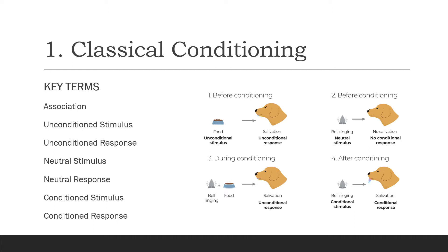After doing this multiple times, Pavlov found that the bell became a conditioned stimulus and gained the conditioned response of salivation from the dog without the presence of food. This shows that the bell, which was originally neutral, had been associated with the food — so an association has been made between two objects to gain a desired behaviour.